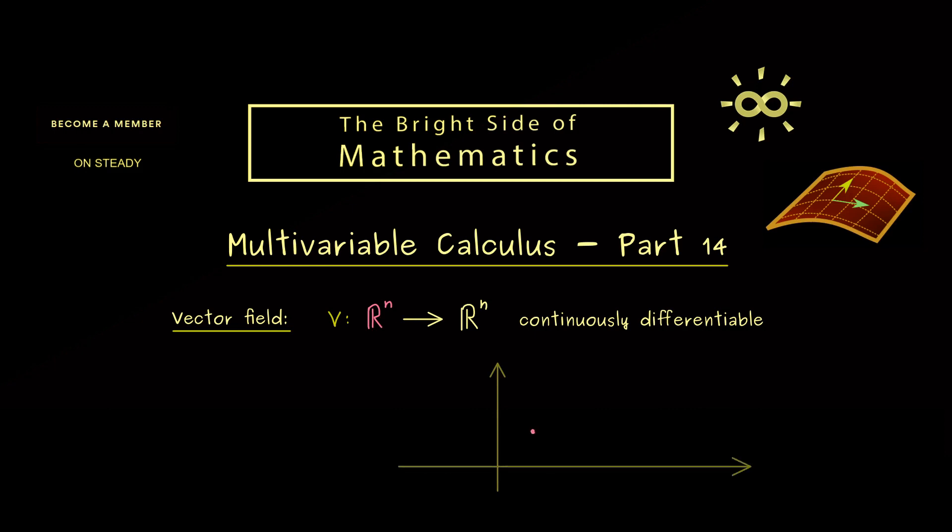So, for example, if we consider R^2, we have a nice visualization for this. We consider this point here in the domain and can visualize the value of the map as an arrow in R^n as well. The important part is we can do this for every point here in the domain, so it could be a complicated picture, but you should have the idea in mind.